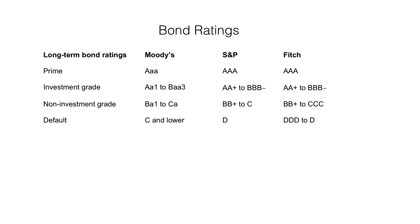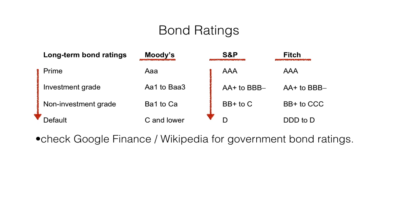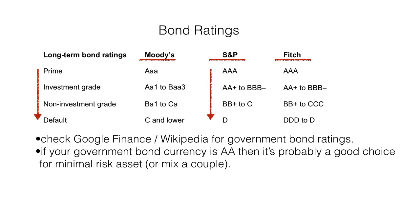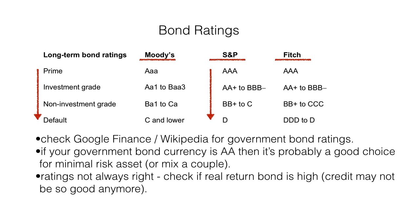What you have here is the bond ratings for the three most popular agencies — Moody's, S&P, and Fitch — they go from prime all the way down to default. If we look at S&P in the middle, the highest is triple-A all the way down to single D. Ratings change frequently, so check Google Finance or Wikipedia for current government bond ratings. My view is that if your government bond is rated double-A, it's probably a pretty good choice for minimal risk assets. You can mix a couple if you're not comfortable taking the risk of just one government. Ratings are not always right — things move quickly in the real world and agencies don't always update ratings right away, so check if your real return on your bond is very high, as that suggests the credit quality has changed dramatically.